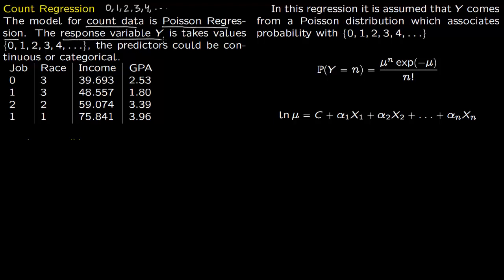Once again, the response variable Y takes on values 0, 1, 2, 3, 4, 5 and so on. But the predictors are as they are in a regression — they could be continuous or categorical. So let us see this in an example. Say you have data of University A, B, C.